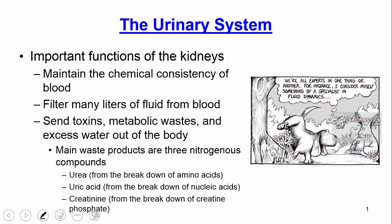What does the urinary system do? Well, it maintains chemical consistency of your blood, filters many liters of fluid from your blood every single day. And it also sends things you don't want, like toxins, metabolic wastes, and excess water out of the body. Some of the main wastes that your urinary system helps get rid of are things like urea, uric acid, and creatinine.